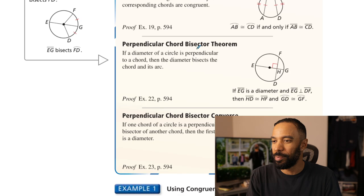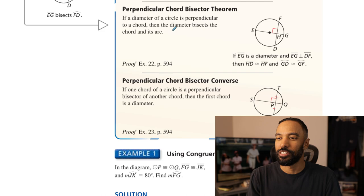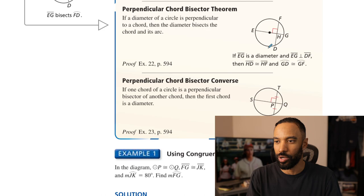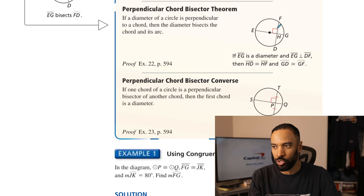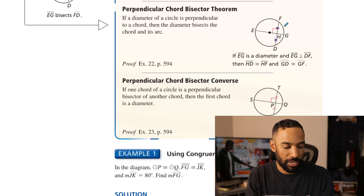Perpendicular chord bisector theorem: if a diameter of a circle is perpendicular to a chord, then the diameter bisects the chord and its arc. That's a very classic proof. Basically, these two parts are congruent because the diameter is perpendicular to the chord — it's also a perpendicular bisector. A lot of things by nature are going to happen with that, and we'll prove it later.